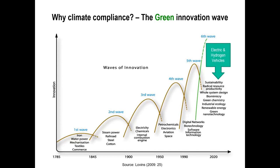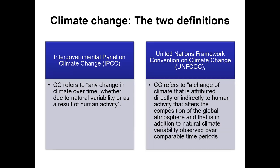When we talk about climate change, you are likely to meet two definitions. One from the IPCC, which says climate change refers to any change in climate over time, whether due to natural variability or as a result of human activity. Another is from the UNFCCC, which says climate change refers to a change of climate attributed directly or indirectly to human activities that alters the composition of the global atmosphere, in addition to natural climate variability observed over comparable periods of time. The UNFCCC definition adds human beings as one of the key challenges — we demand food, productivity, and industrialization, and all these activities lead to emissions of harmful greenhouse gases.